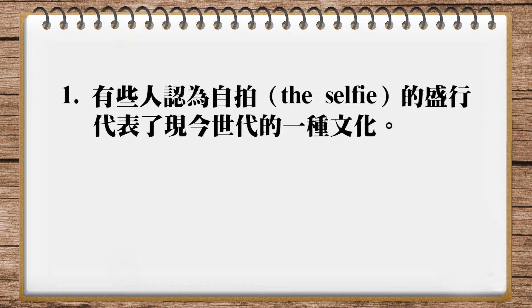And this word is easy to analyze. You start out with 'self' and then you add 'ie' at the end. It's just like 'dog', 'doggy'. It's a diminutive ending. And it makes it into a noun here as well — that part of the word 'self' and then you add 'ie'. That 'ie' is a noun, just like with 'dog', 'doggy'.